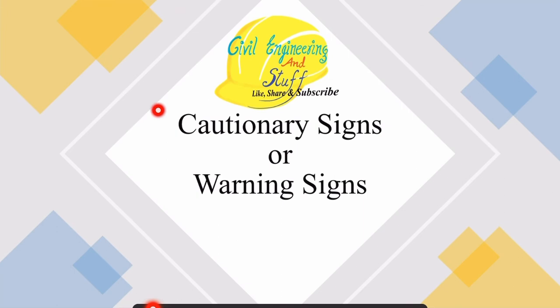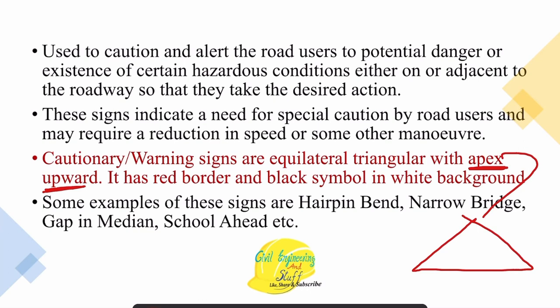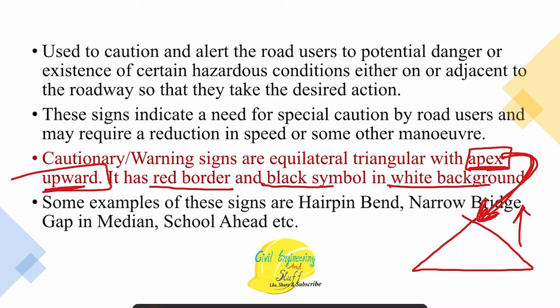Now let us move to the second category — the cautionary sign or warning sign. These warn commuters regarding potential danger or hazardous conditions on the road. Cautionary signs are equilateral triangles with apex upward. Note the difference: the yield sign (a regulatory sign) has apex downward, while the warning sign has apex upward. They have red borders, black symbols, and white background — the color pattern is similar but the apex direction distinguishes them. This indicates it is a cautionary sign.